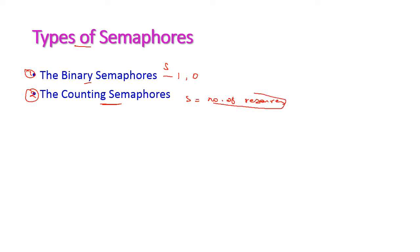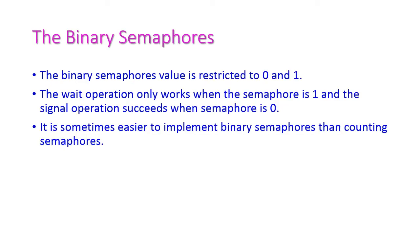In counting semaphore, that many resources are allowed to enter the critical section. For example, if S value equals 4, that means 4 number of processes are allowed to access 4 resources.